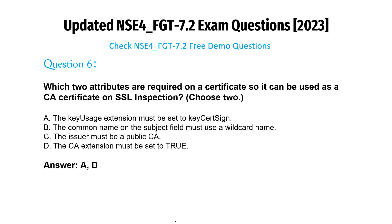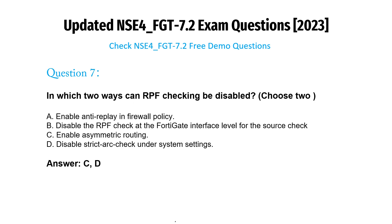Question 6: Which two attributes are required on a certificate so it can be used as a CA certificate on SSL inspection? A) The key usage extension must be set to key cert sign. B) The common name on the subject field must use a wildcard name. C) The issuer must be a public CA. D) The CA extension must be set to true. Answer: A, D.